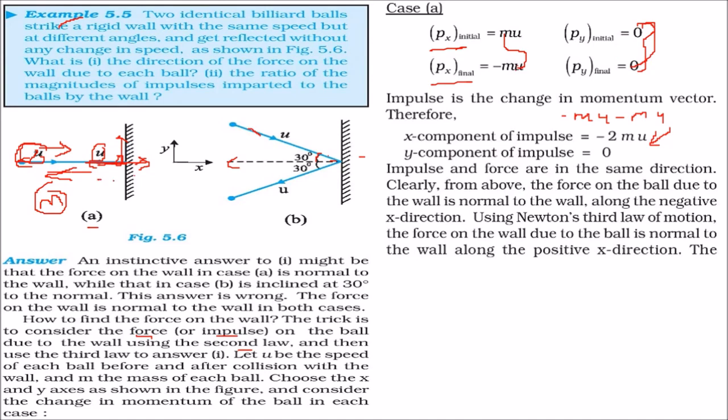And in this case, the impulse and force are in the same direction. The force of the wall due to the wall is normal to the wall because it is not going anywhere. And this will be along this negative x direction. As you see here, the sign is also showing that. And if you use the Newton third law of motion, the force on the wall due to the wall is normal to the wall. That is, in the positive x direction.